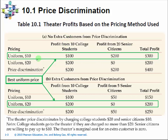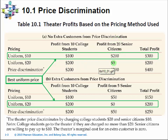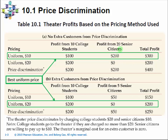Let's think about two different uniform prices — where the movie theater charges one price to all customers. If the price is set at $10, college students will certainly buy tickets because their willingness to pay is $20, and senior citizens will also buy since they're willing to pay $10. The movie theater receives $100 from the students and $200 from the 20 senior citizens — a total revenue of $300. Assuming zero cost, this is the short-term profit.